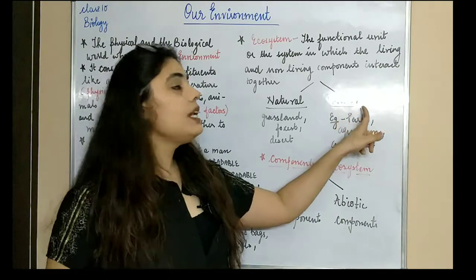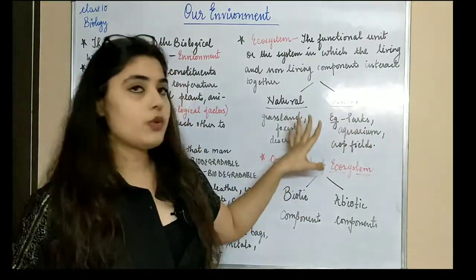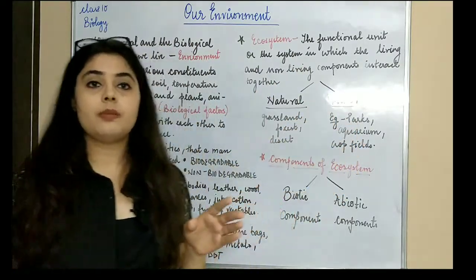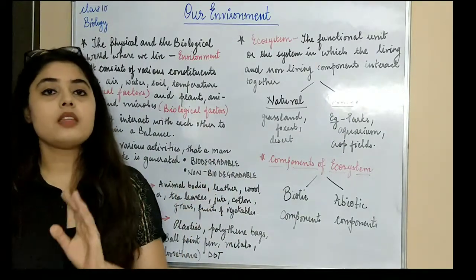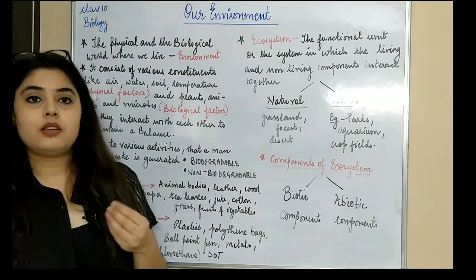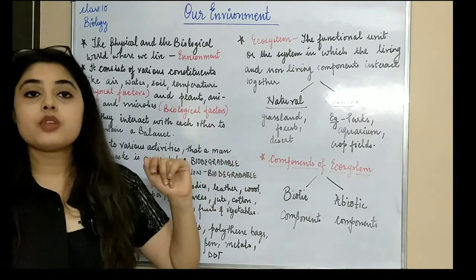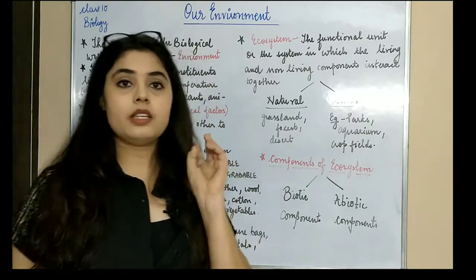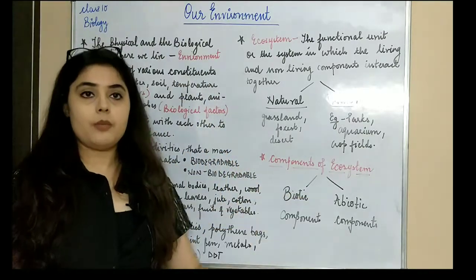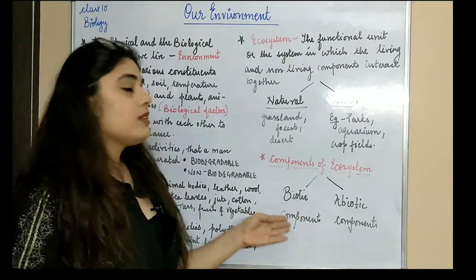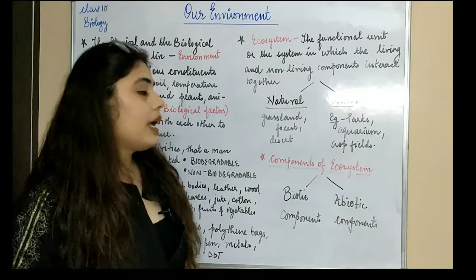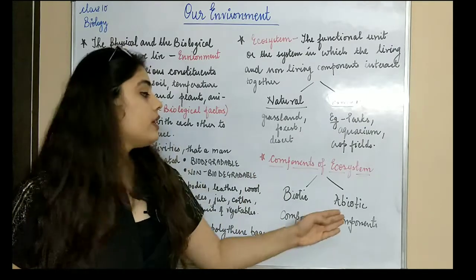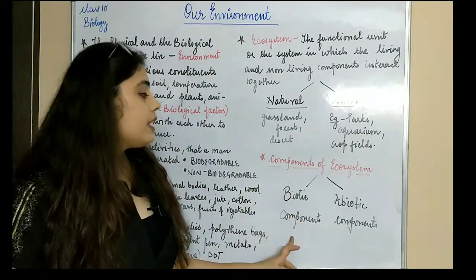There are also man-made ecosystems — ecosystems that human beings have created — for example, zoos, parks, amusement parks, aquariums, and crop fields. Every ecosystem has two components: the biotic component and the abiotic component. The biotic component is the living component — like human beings, plants, animals, and microorganisms. The abiotic components are the non-living components — like air, water, soil, moisture, humidity, and temperature.